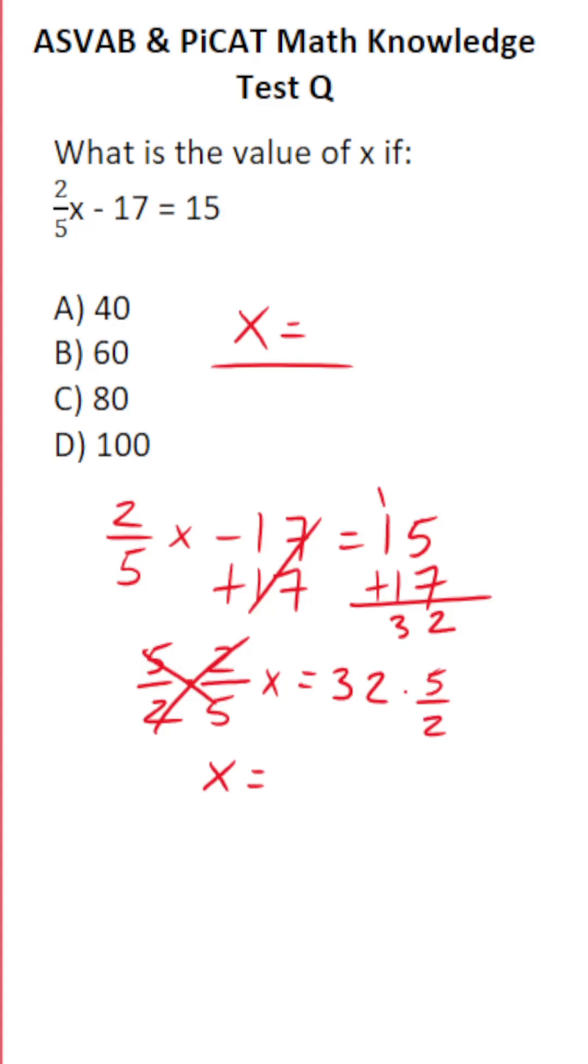Now this math is actually pretty easy to do. I can write 32 as a fraction by placing it over 1. Now I'm multiplying two fractions, but before I do that I can actually cross reduce because I know 2 goes into 2 one time. 32 divided by 2 is 16.